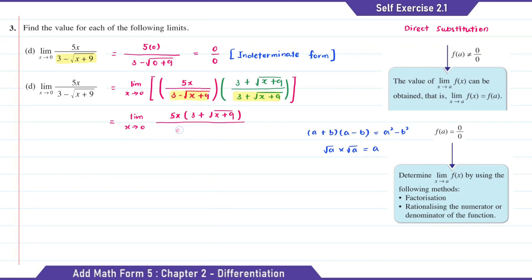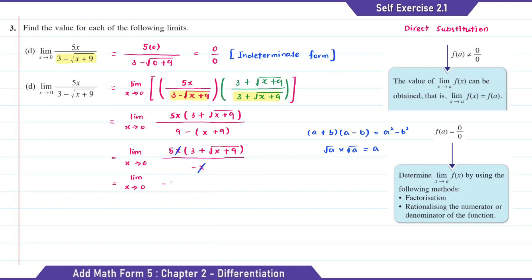So for the numerator, the answer will be 5x times (3 plus square root of x plus 9). As for the denominator, 3 squared is equal to 9, then minus (x plus 9). The answer for the denominator will be equal to negative x. So here we can cancel the x. Then what's left will be negative 5 bracket (3 plus square root of x plus 9). So now we can substitute x with 0. This is equal to negative 5 times 6, which is equal to negative 30.